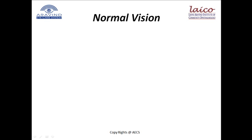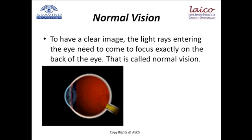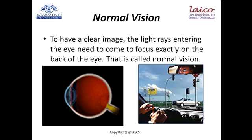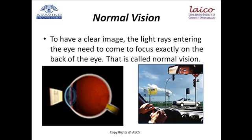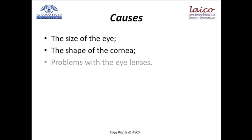Let's start talking about normal vision. To have a clear image, the light rays entering the eye need to come to focus exactly on the back of the eye. That is called normal vision. This process creates the crisp image most of us are used to. However, due to abnormal size of the eye, shape of the cornea, or problems with the eye lenses, the image that gets to the brain is compromised. This is called a refractive error.